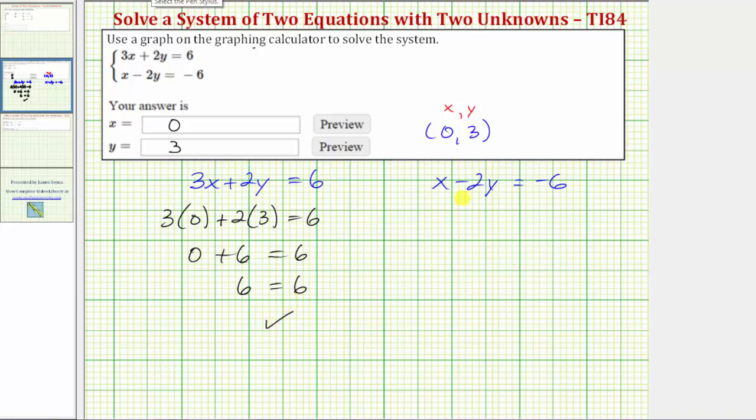And now for the second equation, again we make the same substitutions. So we'd have 0 - 2 times 3 = -6. Well, we have 0 - 6 = -6. 0 - 6 is -6. So again, because -6 = -6 is true, this verifies the ordered pair satisfies both equations, and our solution is correct. I hope you found this helpful.